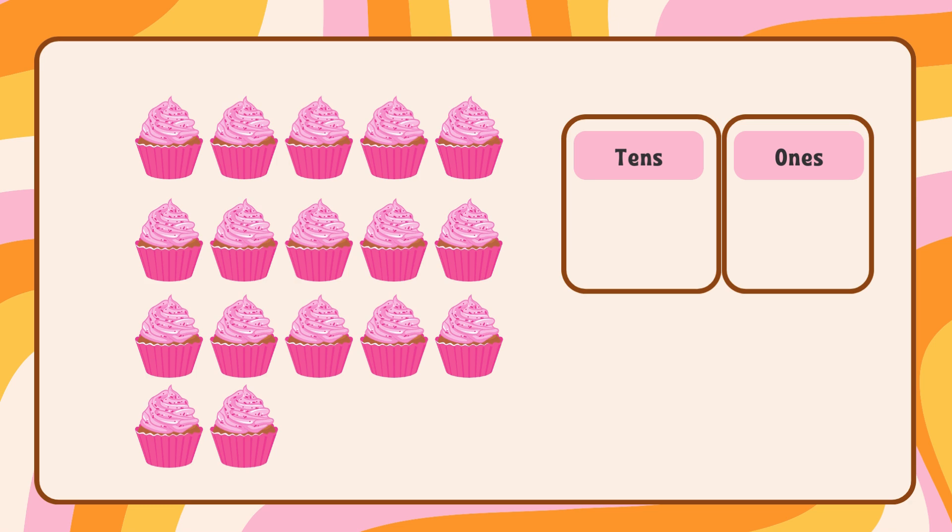Let's understand the concept of 10s and 1s place by a given set of objects. Here we have some cupcakes as the objects. Now let's group them in 10s and 1s place. Let's start counting them.